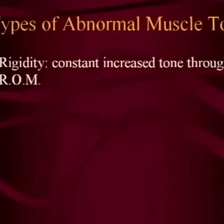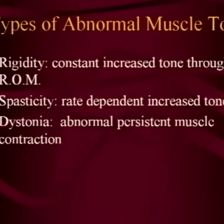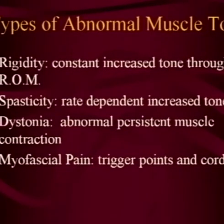There are different types of muscle tone problems. Rigidity is a constant increase in muscle tone — the muscles are tight all the time, irrespective of how you move them. Spasticity, on the other hand, is rate-dependent: the faster you pull on a muscle, the more tight it gets. Dystonia is used as a general term for all abnormalities of muscle tone, but also refers specifically to a condition where a limb is tightened in a particular position with muscles contracting all the time. Myofascial pain is what people commonly call muscle spasms, as in back aches, and people with neuroimmunologic disorders can get these spasms as well.